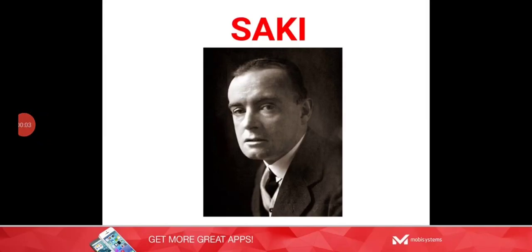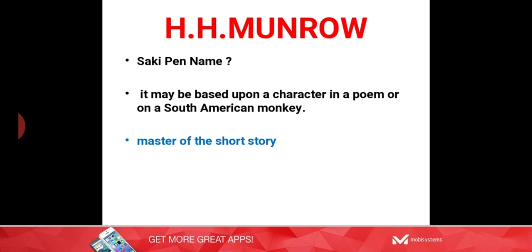Hello friends, in this lecture we are getting information about a different type of character in English literature — in Enchanted English. Just observe this picture: it is of Saki. When you hear this name, Saki, what do you remember? This person was H.H. Munro, and his pen name was Saki.